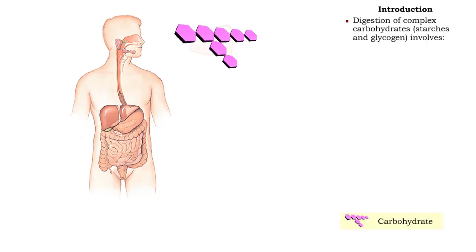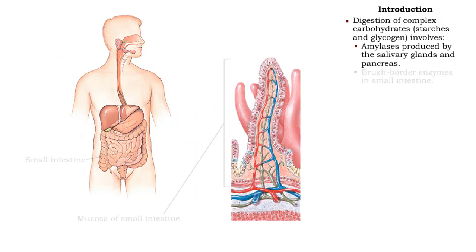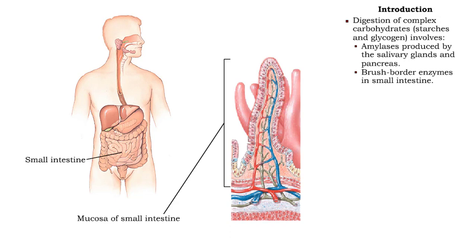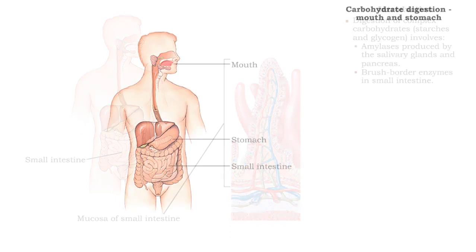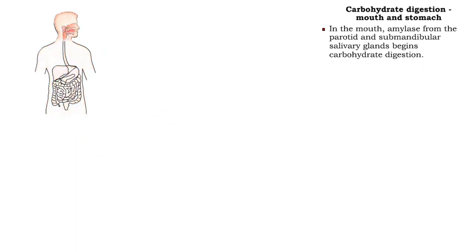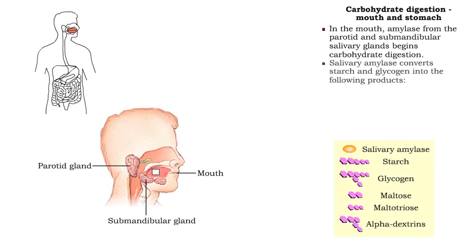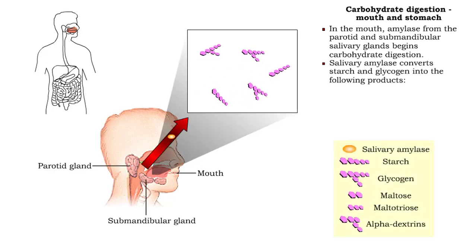The digestion of complex carbohydrates involves amylases, produced by both the salivary glands and pancreas, and brush border enzymes in the small intestine. In the mouth, salivary amylase from the parotid and submandibular salivary glands begins carbohydrate digestion. The amylase converts starch and glycogen into maltose, maltotriose, and alpha-dextrins.